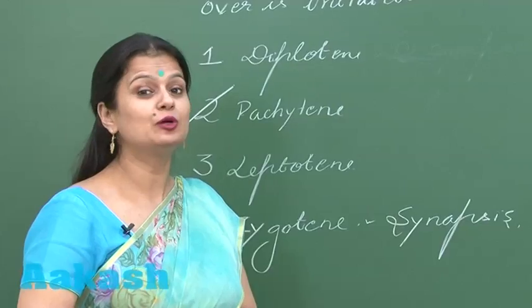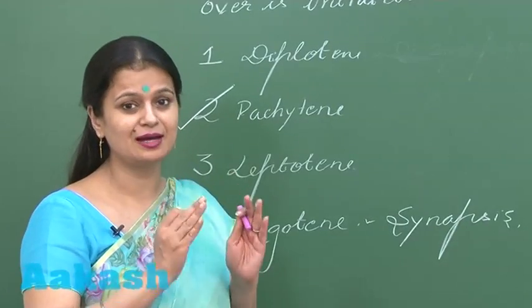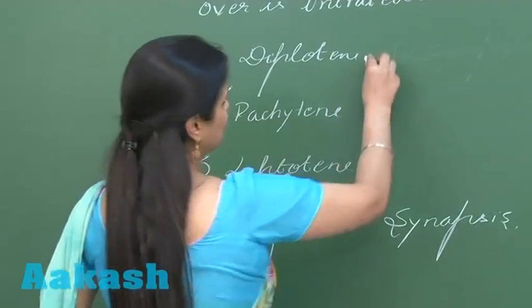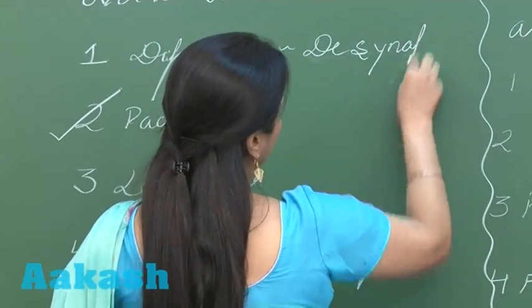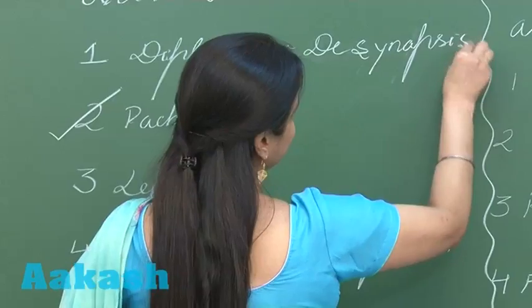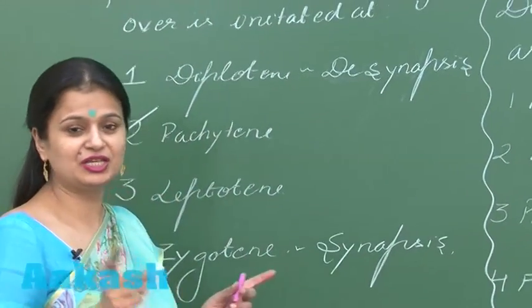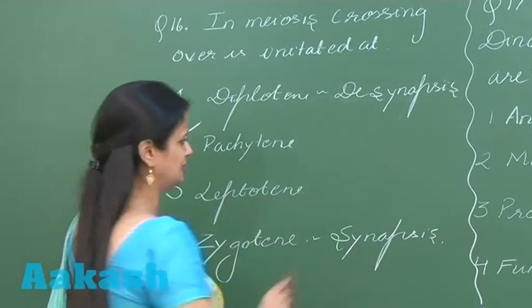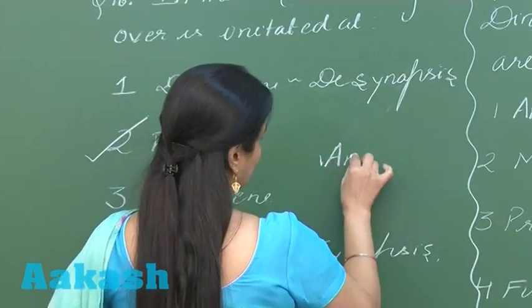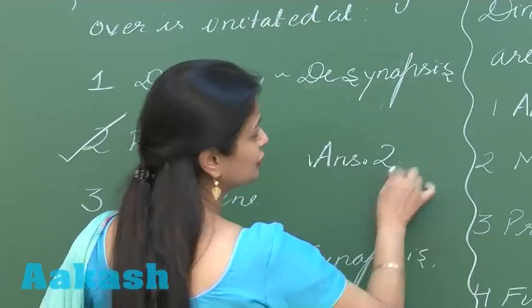The homologous chromosomes start separating, so you can say desynapsis is initiated here. So which stage is crossing over going to be initiated? It's pachytene, so the right answer here is option number 2.